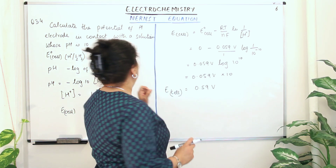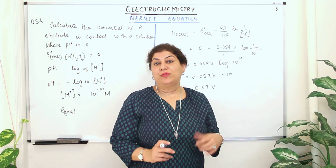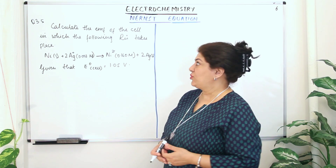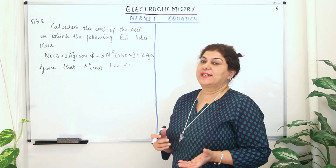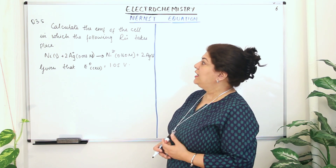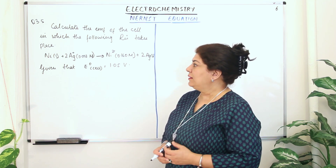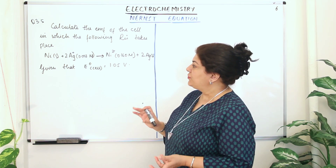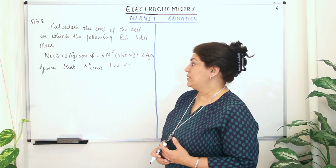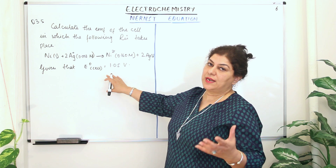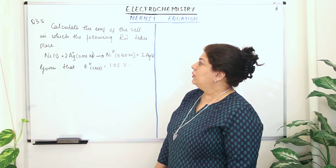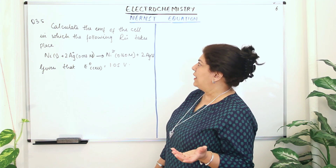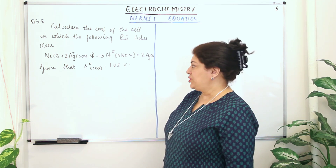That was question 3.4. Let me now solve one more question before I wrap up. This is in-text question 3.5, which is very similar to the solved example. You have to calculate the EMF of the cell in which nickel reacts with silver ions to give nickel ions and silver solid. The concentrations of the silver and nickel salts are given, and the standard EMF of the cell is provided. Let us first write the cell representation, even though we are only asked to calculate the EMF.